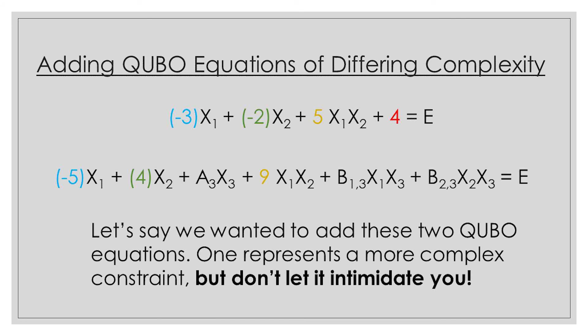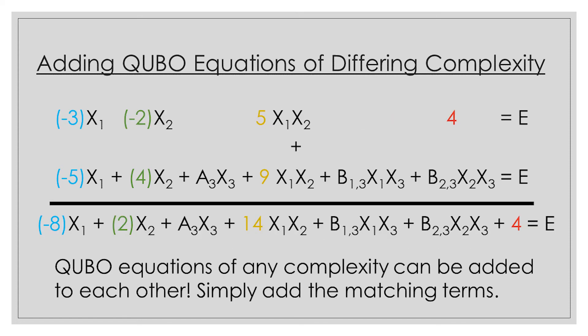Let's cover one last concept before we wrap up this video. Let's say we wanted to add a three-variable QUBO equation to a two-variable QUBO equation, where we introduce an object x3. The end result is exactly the same type of calculation. Even though we now have values a3, b13, and b23 on the matrix, it doesn't really matter since we just add up all the individual values together — a1's together, a2's together, b12's together, b13, and b23. So b13 plus 0 and b23 plus 0 is just b13 and b23 of the original value. This means that no matter how complex a condition may be, it can be added to conditions of any other complexity, meaning you can solve a problem with both complex and simple constraints using annealers.